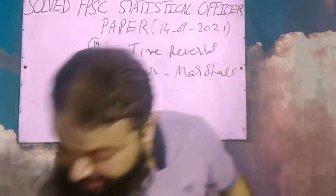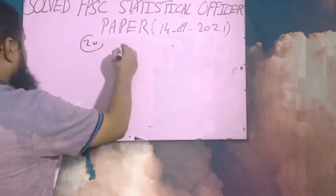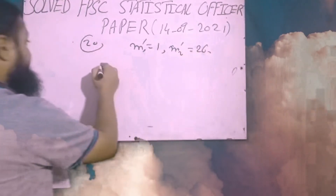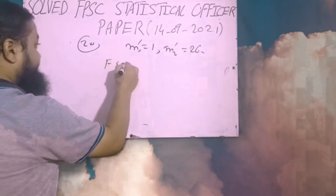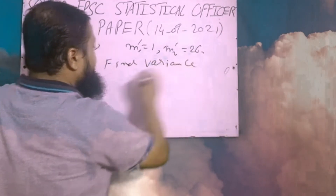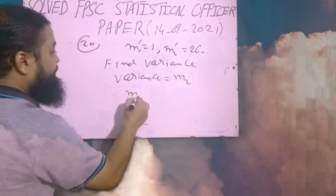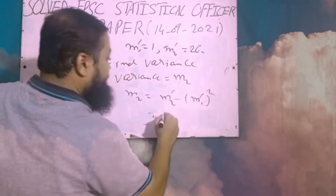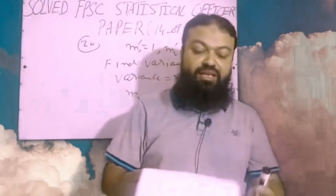Question number twenty: given that moments about 25 are m₁′ = 1 and m₂′ = 26, find the variance. The formula is: variance = m₂ = m₂′ − (m₁′)² = 26 − 1² = 25. So 25 is the correct option in the exam.